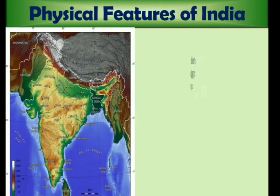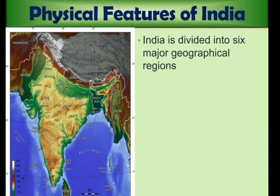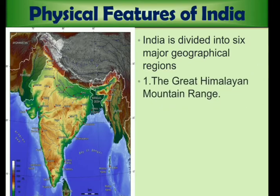India is a vast country with great variations from place to place. According to the differences in physical features, climate, and natural vegetation, we can divide India into 6 regions, and they are: The Great Himalayan mountain range,